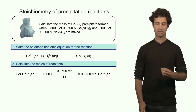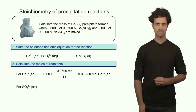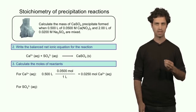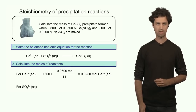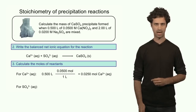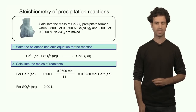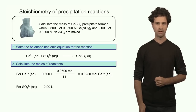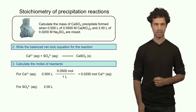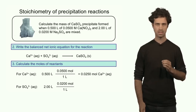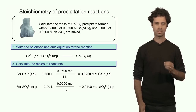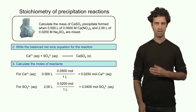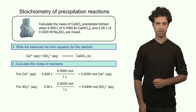We can do the same for the sulfate anions. Sulfate ions come from sodium sulfate, and each sodium sulfate unit produces one sulfate anion. Multiplying the volume and molarity of that solution: 2 liters times 0.02 molar equals 0.04 moles of sulfate ions.